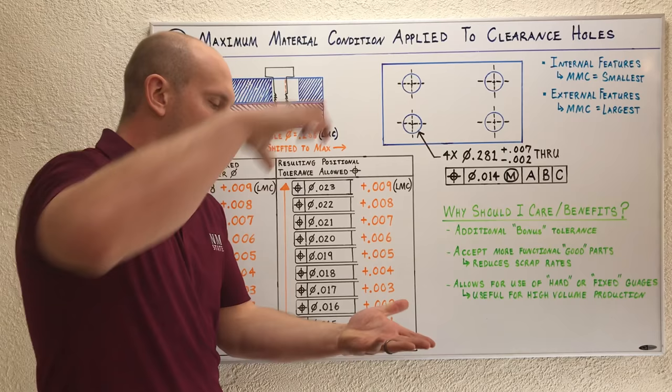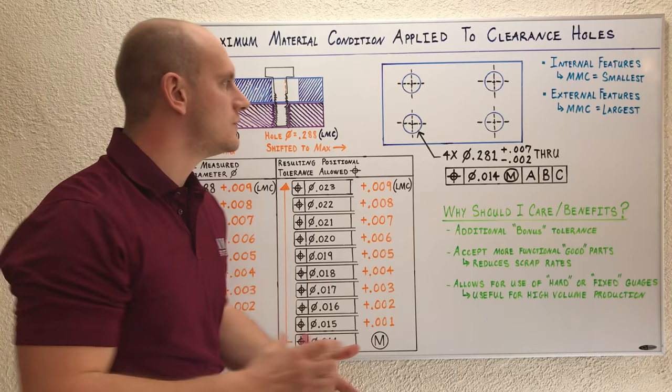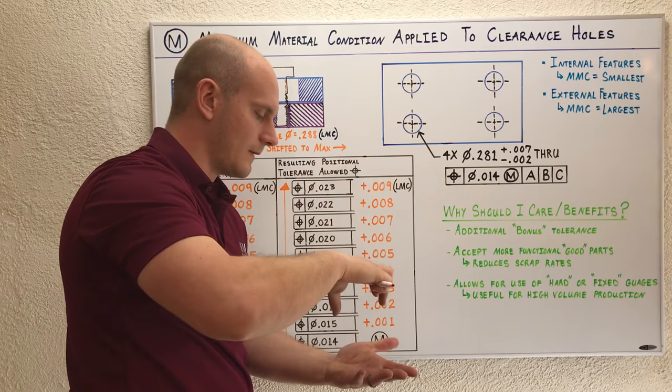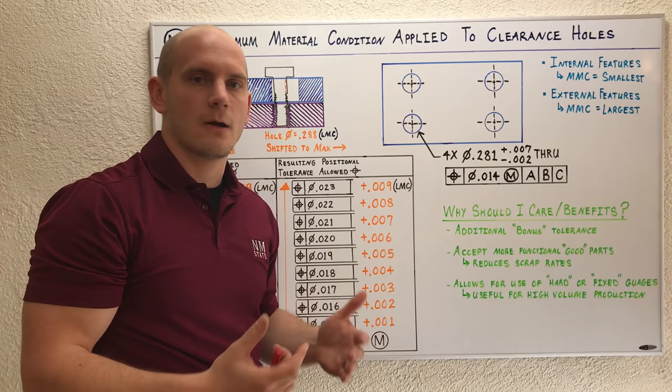What you want to do is manufacture a hard fixed gauge where you can take that part off the production line, put it into your fixed gauge, and if it fits, you know you have a good functional part. You can do that as many times as you want. Then, if you get a part that doesn't fit, stop production, find out why you're getting that error, fix it, and get your expensive production line back going.